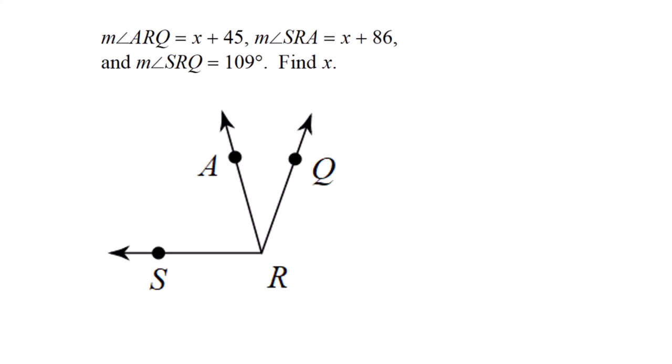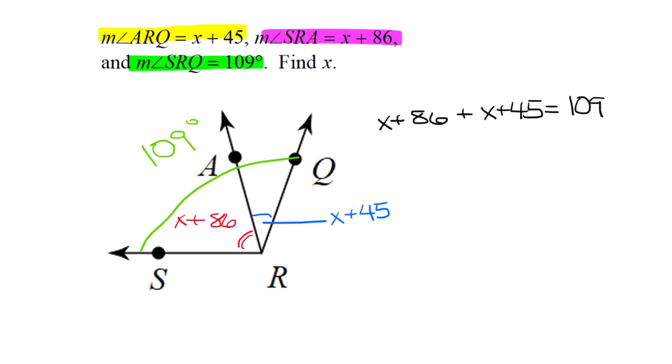This problem is about angle addition postulate. Angle ARQ is x plus 45, angle SRA is x plus 86, and the entire angle SRQ is 109. Add those two little angles together and set equal to 109.